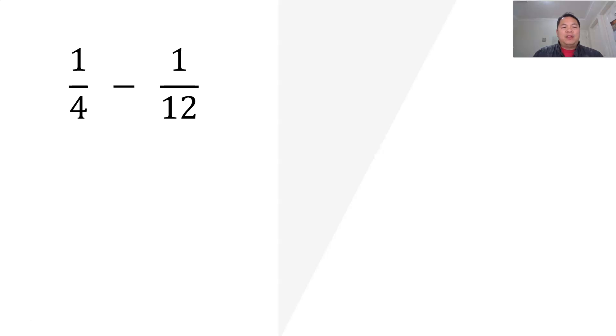Next one. So 1/4 minus 1/12. Again, 4 and 12 are related, because 12 is a multiple of 4. So how do we get 12 here? We simply need to times 3 to the denominator. And whatever you do to the denominator, you have to do with the numerator.